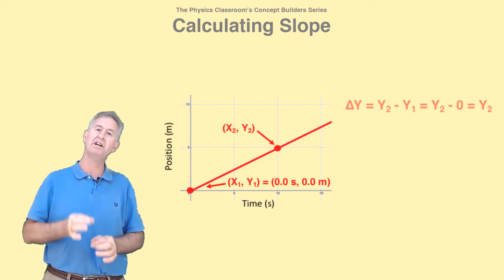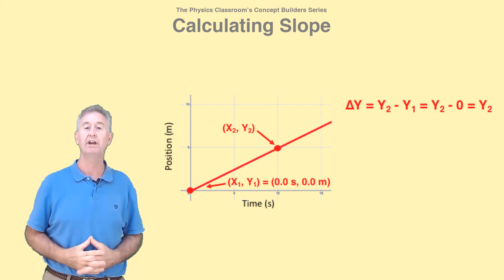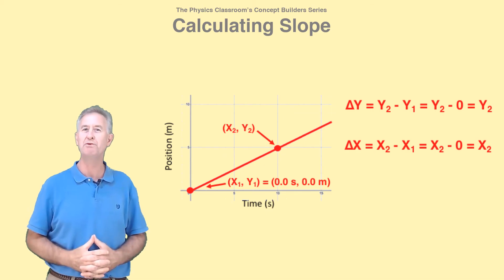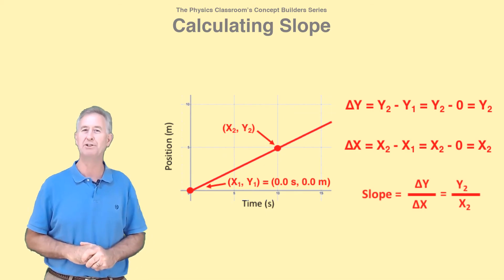Because when you calculate the rise, it just becomes y2 value. And when you calculate the run, or delta x, it just becomes the x2 value. And the slope is y2 divided by x2.